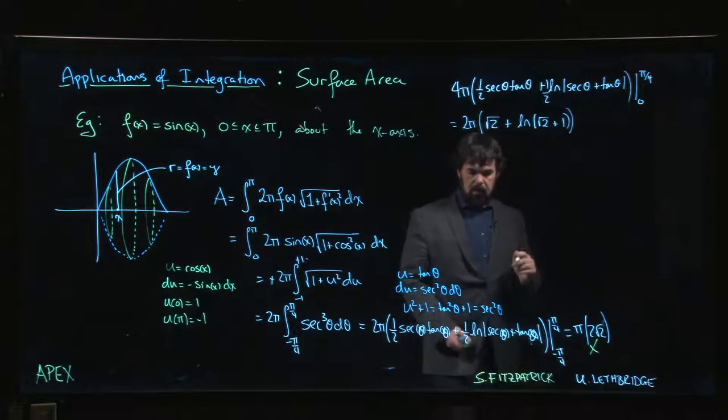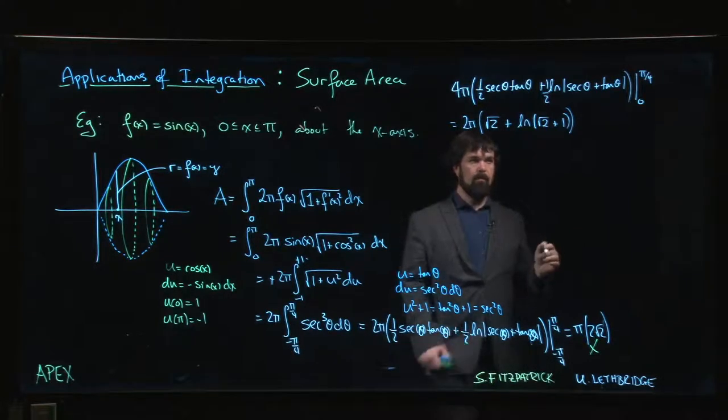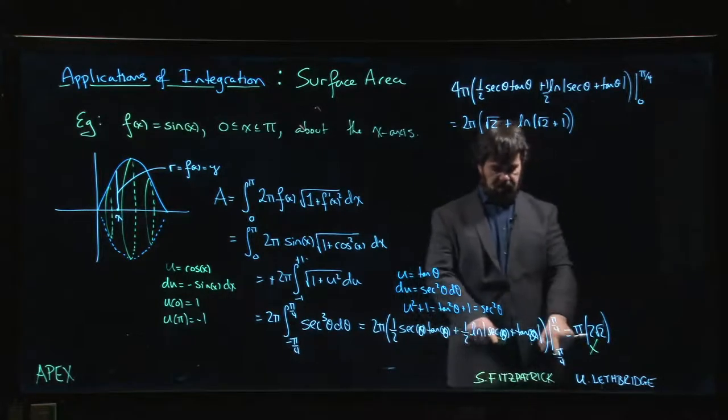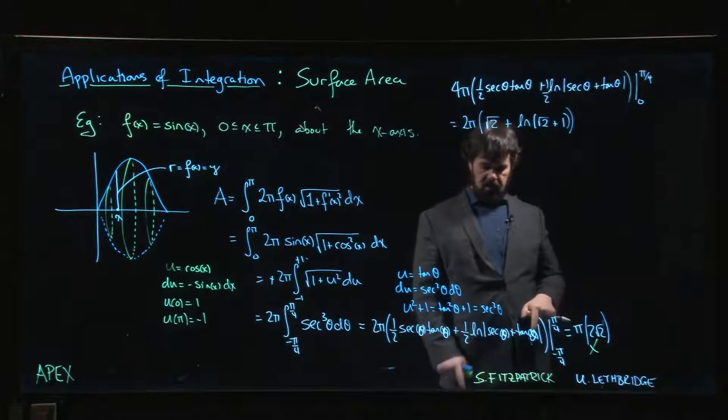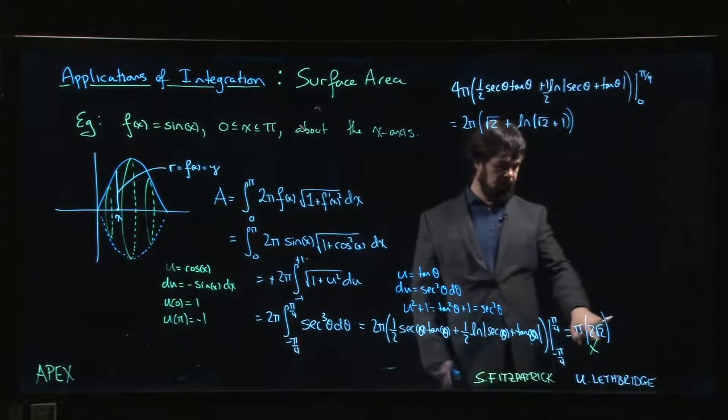So that's our answer. If we had forgotten and did the lower limit instead, we got the two root two part before, the two pi root two is there.